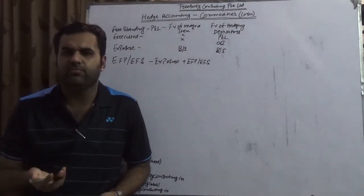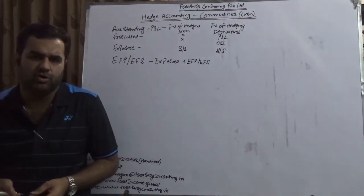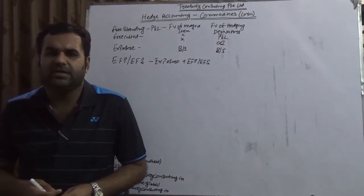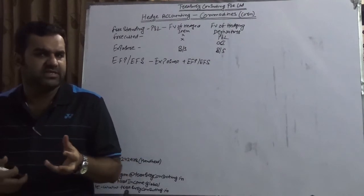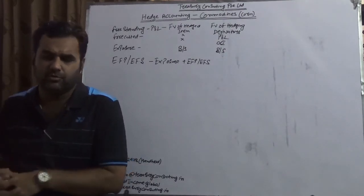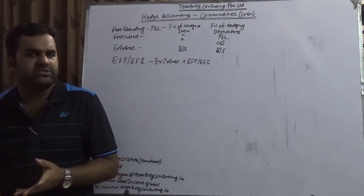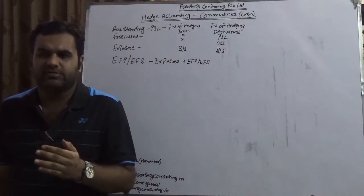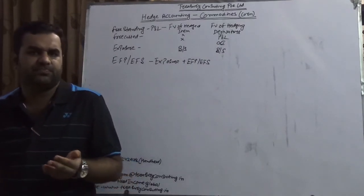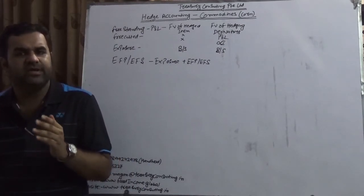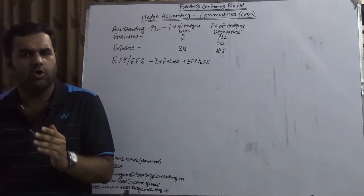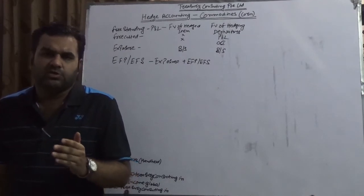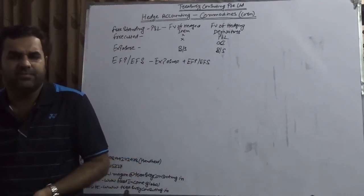Before taking on hedge accounting, there are few important concepts to understand. There are a lot of apprehensions about the dollar offset method and the regression method. Unfortunately, many people find that dollar offset is not turning effective, but these people do not know that dollar offset will never be effective unless you are using a rolling or regular hedging program. If a company is on an ad-hoc hedging program — for example, a company in the aviation sector in India — this will not work.